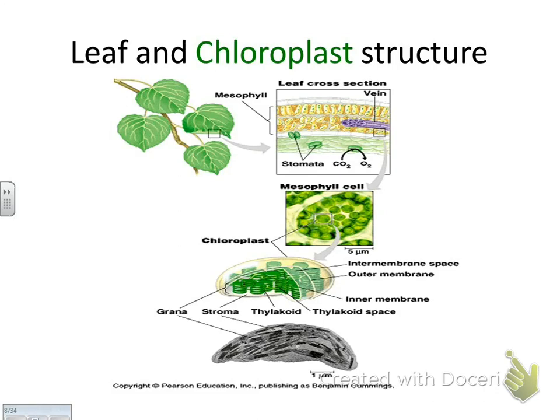Chlorophyll is a light-absorbing pigment found in chloroplasts — and you probably already know chlorophyll is the pigment that makes plants green. It's found in the mesophyll layer. So if this is the very top of the leaf, the mesophyll layer is that more yellow color, and it has chloroplasts inside it. The chloroplasts are found in that mesophyll layer.